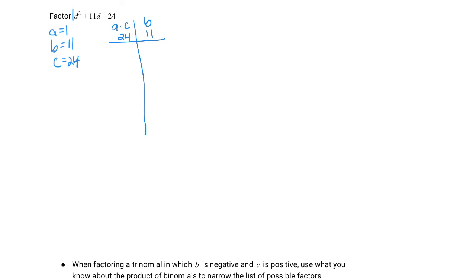First, we're going to focus on the 24 part. We need all the two number factors that give us 24. So 1 times 24, 2 times 12, 3 times 8, 4 times 6. And we add them up under the b column: 25, 14, 11, 10. We care about the ones that add up to b, and that's 3 times 8.